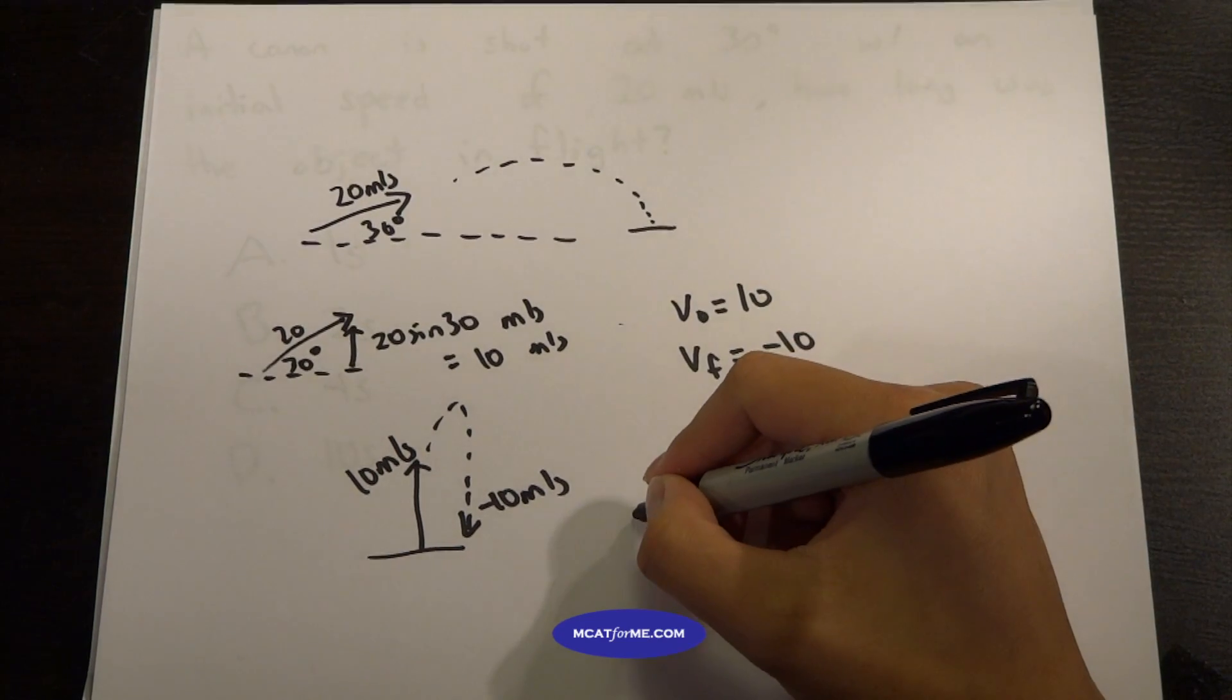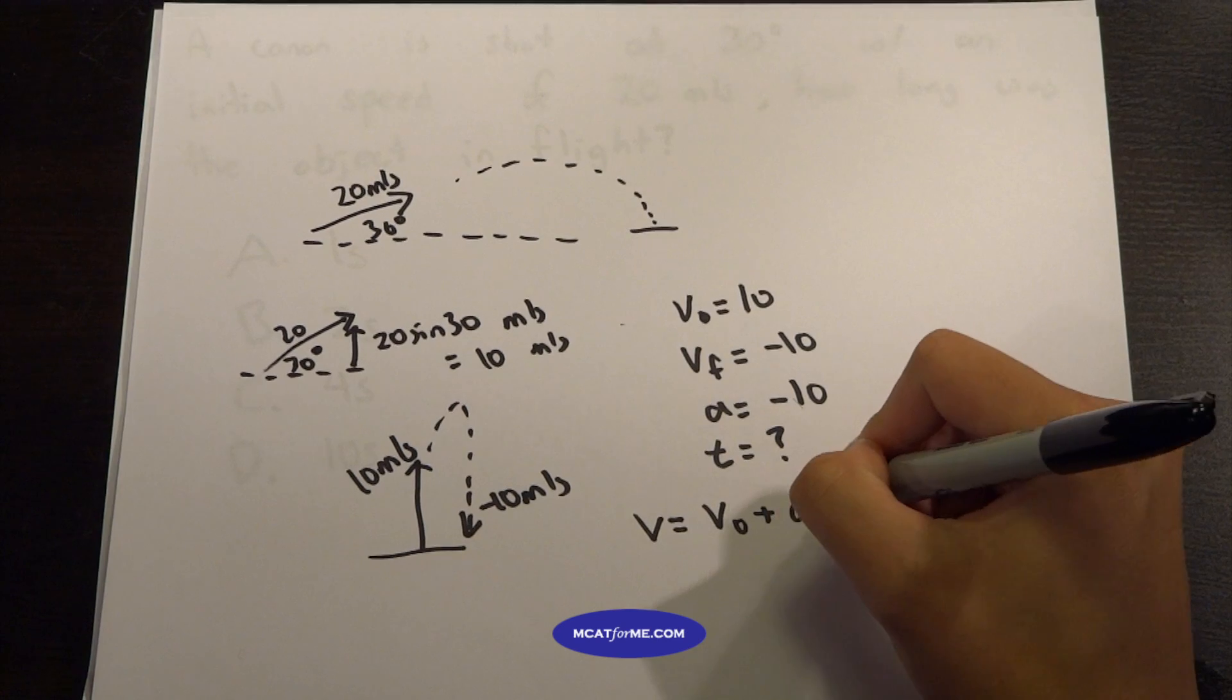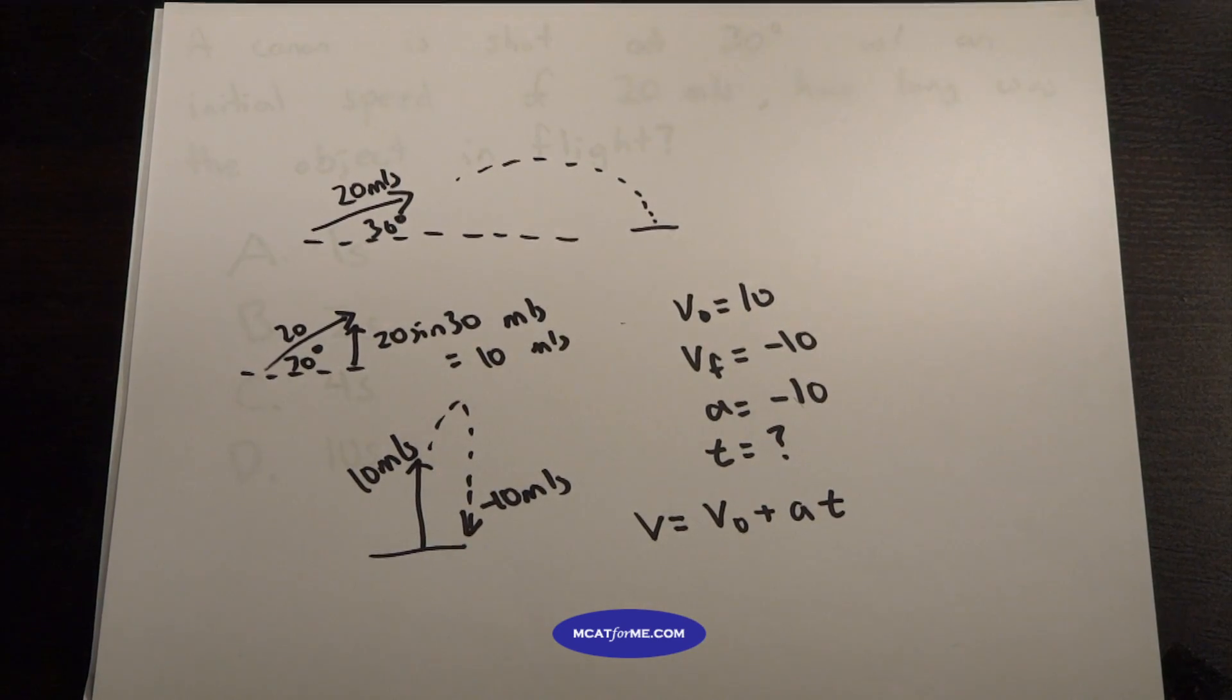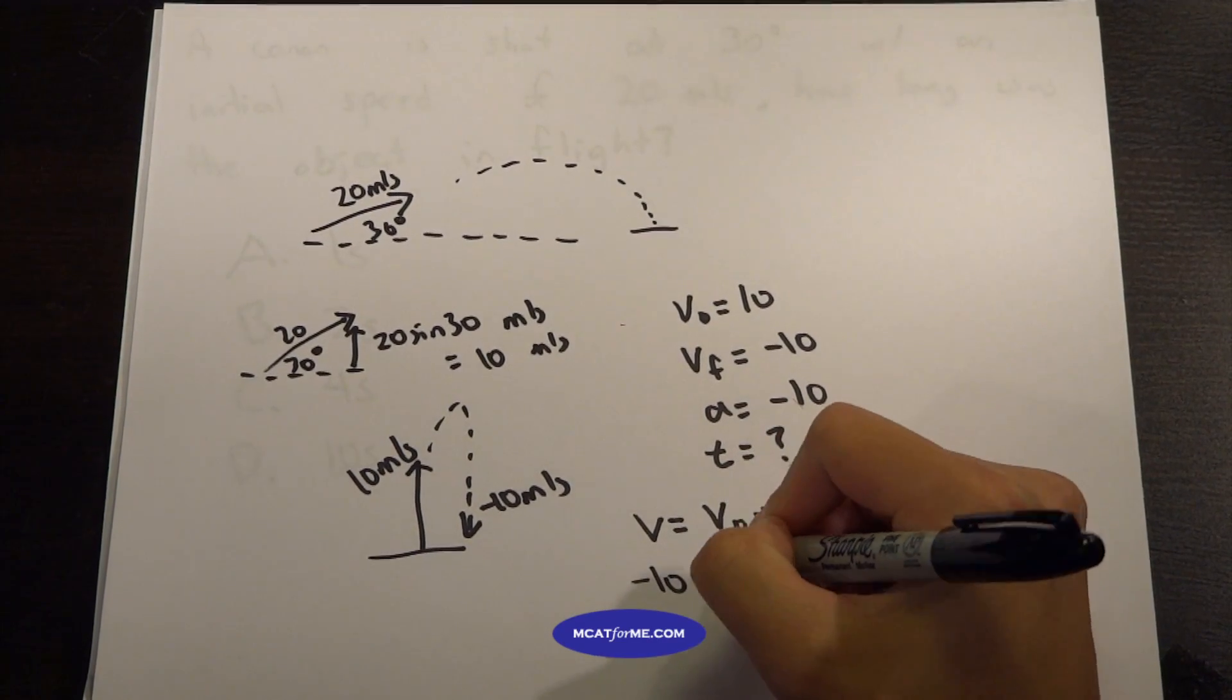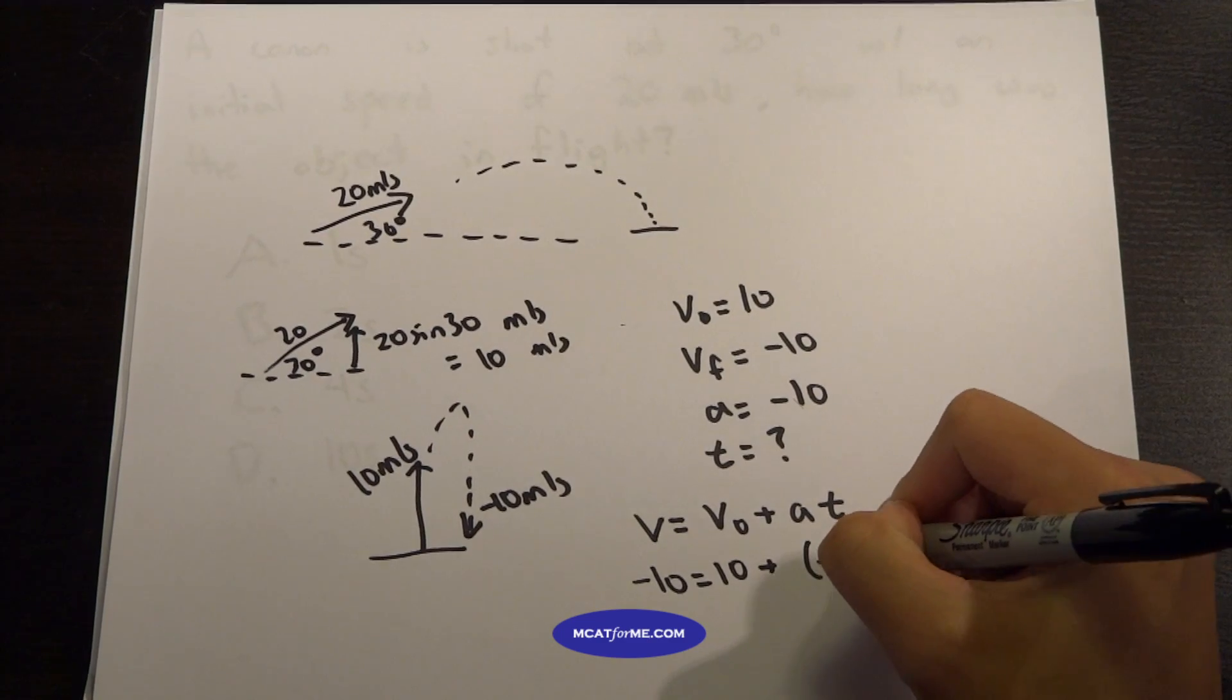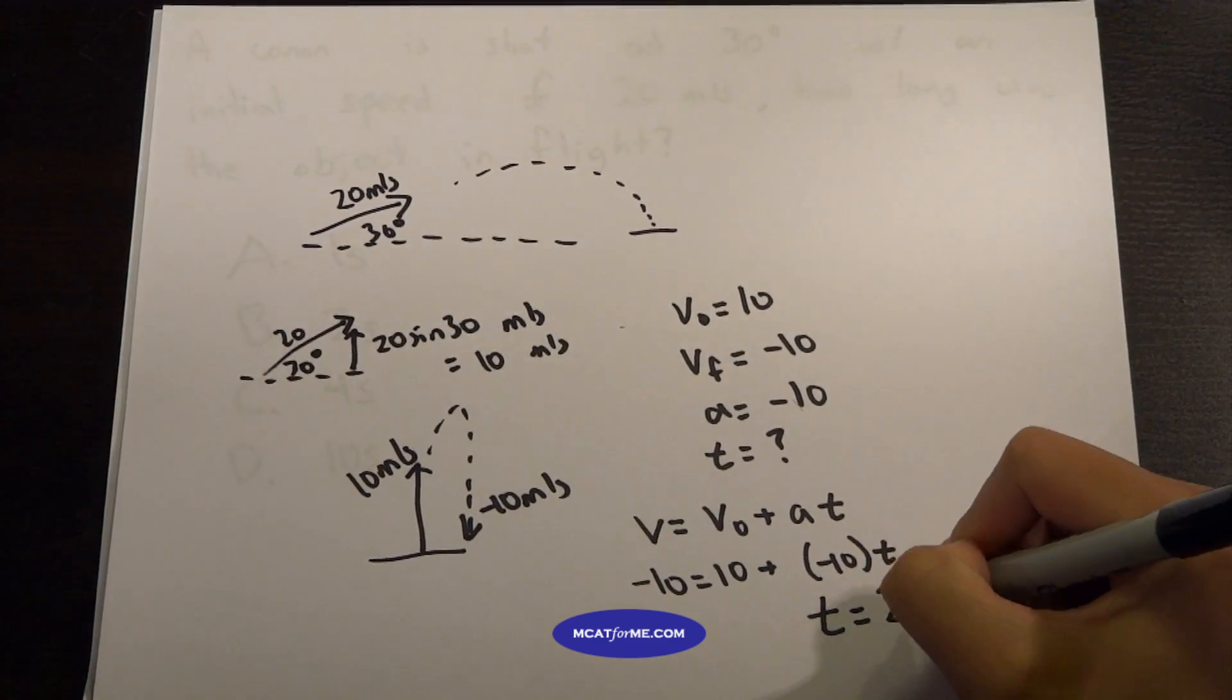So the equation that we will use is V equals V0 plus AT. That's the equation that we use when we are not given anything about D. So we just plug these in. Negative 10 equals 10 plus negative 10 times T. And we find that T equals 2 seconds.